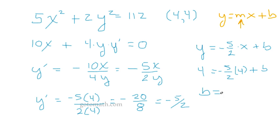b is going to be equal to... 5 times 4 is 20. 2 goes into 20, 10 times. So that's -10. Bring it over, it's positive 10. It's 14. So b is 14.